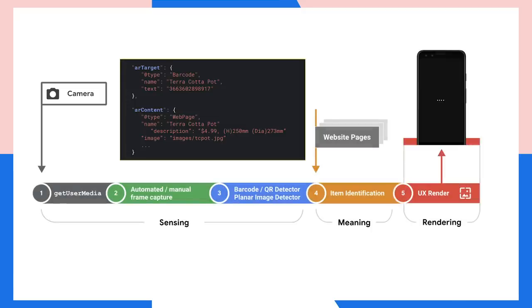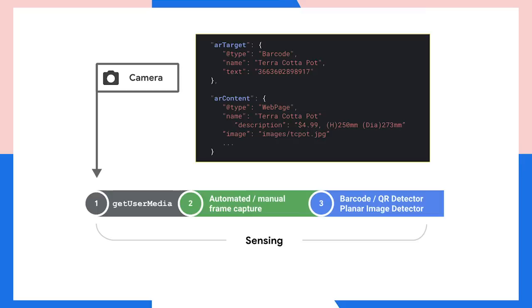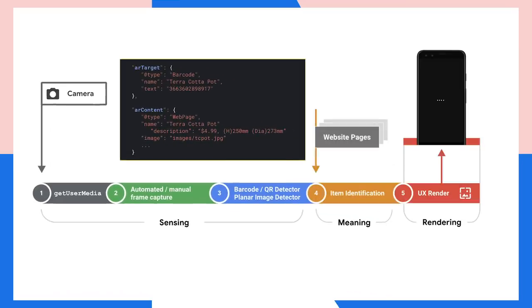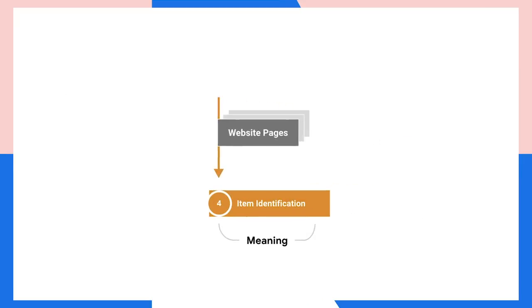As a developer, here's the architectural overview. The Web Perception Toolkit comes in, broadly speaking, three parts: the sensing, the meaning making, and the rendering. The sensing is where we take in the camera feed — we use getUserMedia to get access to the camera, then take snapshots of particular frames, either automatically in a passive mode or in a more active mode where the user taps to capture a frame. We pass those frames off to a barcode detector and a planar image detector. Once we detect something, we pass that to the meaning maker, which uses structured data to figure out what the object is and what information it should show in the UX and rendering part.